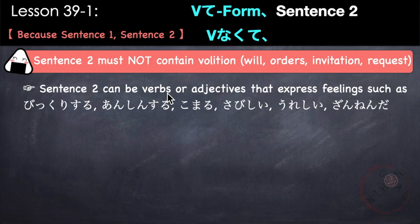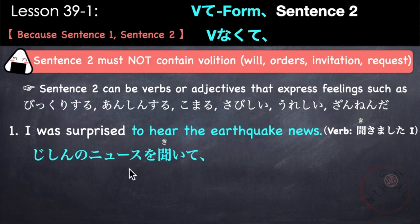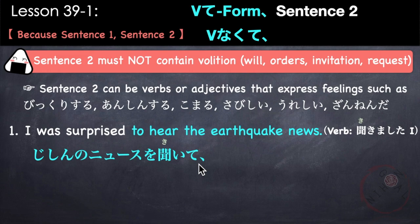For example, when sentence two is a verb or adjective expressing feelings — like bikkuri suru (to be surprised), anshin suru (to be relieved), or komaru (to be in trouble) — we use this pattern. Example: 地震のニュースを聞いて、びっくりしました。 I was surprised to hear the news about the earthquake. The verb kikimashita becomes kite (te-form), regardless of tense.